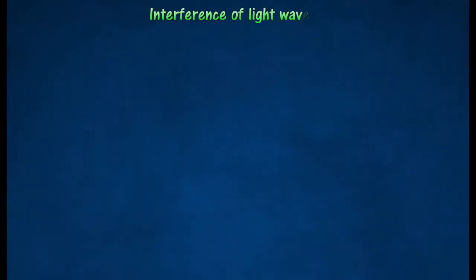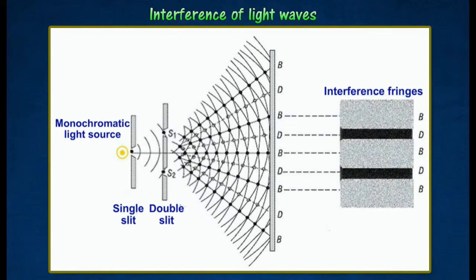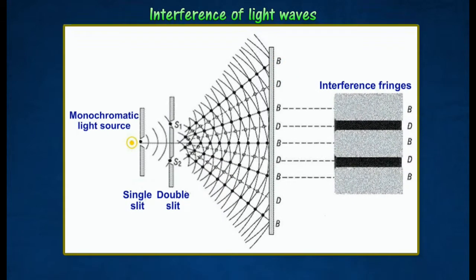In Young's double slit experiment, monochromatic light passing through a single narrow slit is incident on a double slit which acts as coherent sources. Light waves from the double slit undergo constructive and destructive interference to produce a series of bright and dark fringes on the screen.